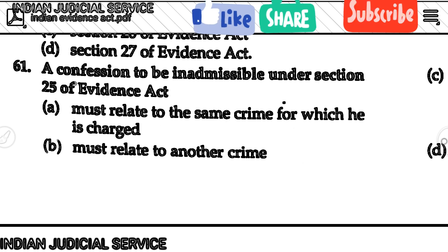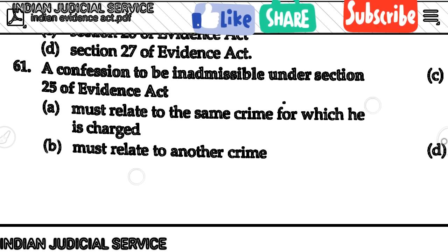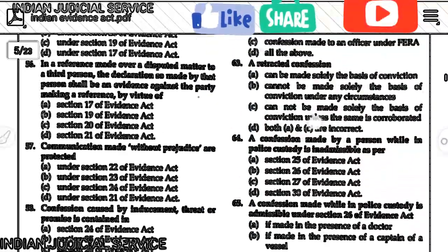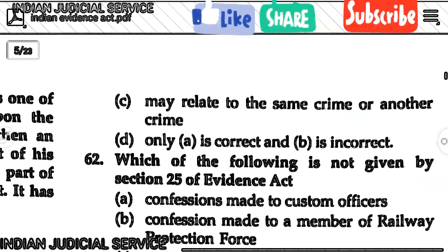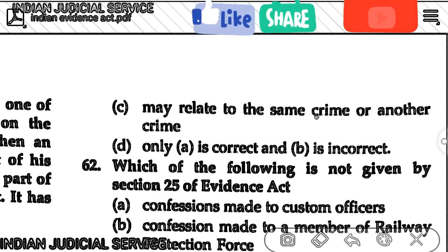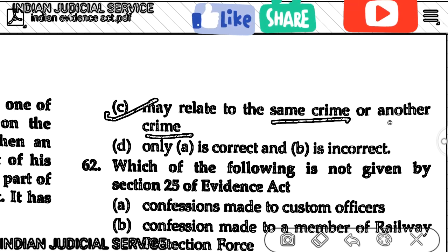Question number 61: A confession to be inadmissible under Section 25 of the Evidence Act — may it be related to the same crime or another crime? The answer is option C — it may be related to the same crime or another crime.